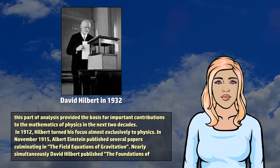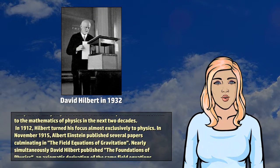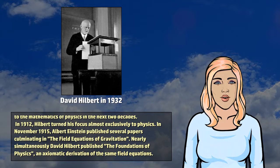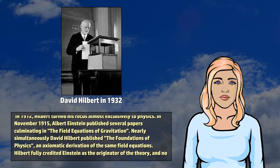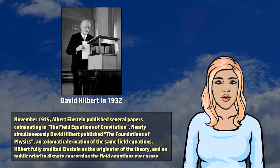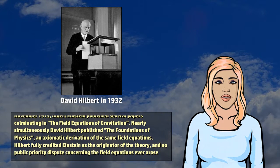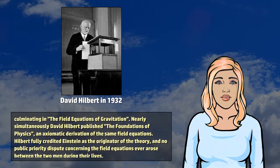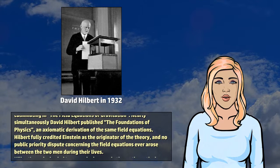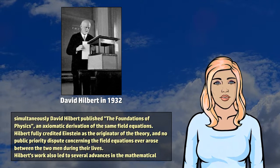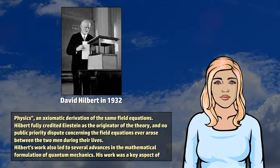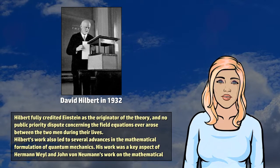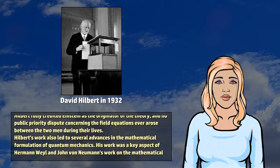In 1912, Hilbert turned his focus almost exclusively to physics. In November 1915, Albert Einstein published several papers culminating in the field equations of gravitation. Nearly simultaneously, David Hilbert published The Foundations of Physics, an axiomatic derivation of the same field equations. Hilbert fully credited Einstein as the originator of the theory, and no public priority dispute concerning the field equations ever arose between the two men during their lives.